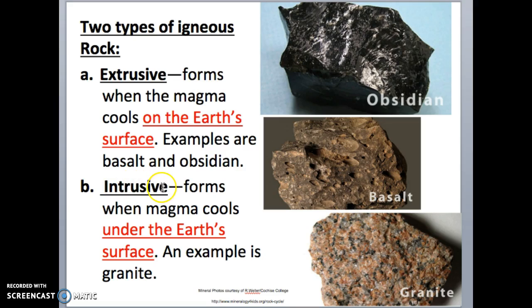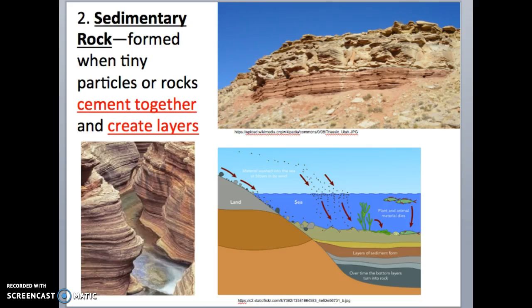Intrusive igneous rocks form when magma cools inside of the Earth's crust — it doesn't come out, it actually cools inside. A good way to remember it: intrusive means inside, extrusive means exterior. An example of an intrusive igneous rock is granite, shown here.